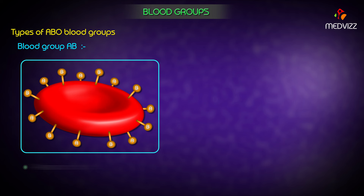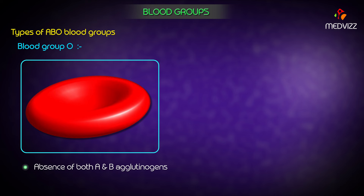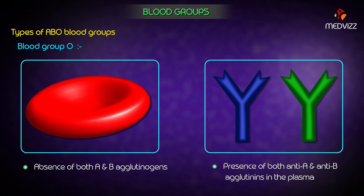Blood group AB is characterized by presence of both A and B agglutinogens on the RBC membrane and absence of both anti-A and anti-B agglutinins from the plasma. Blood group O is characterized by absence of both A and B agglutinogens on the RBC membrane and presence of both anti-A and anti-B agglutinins in the plasma.